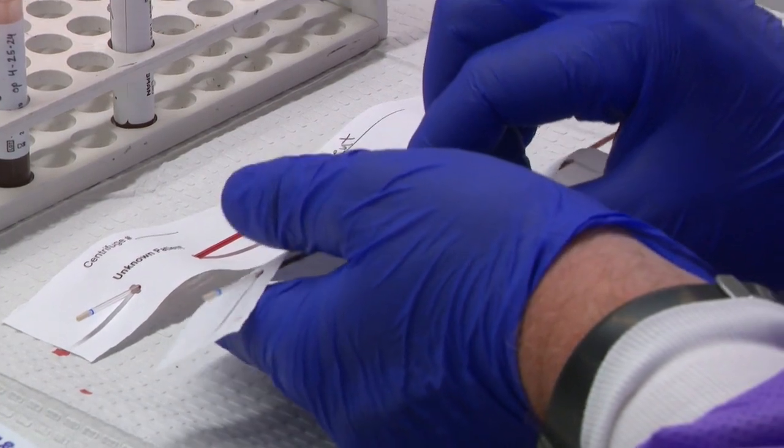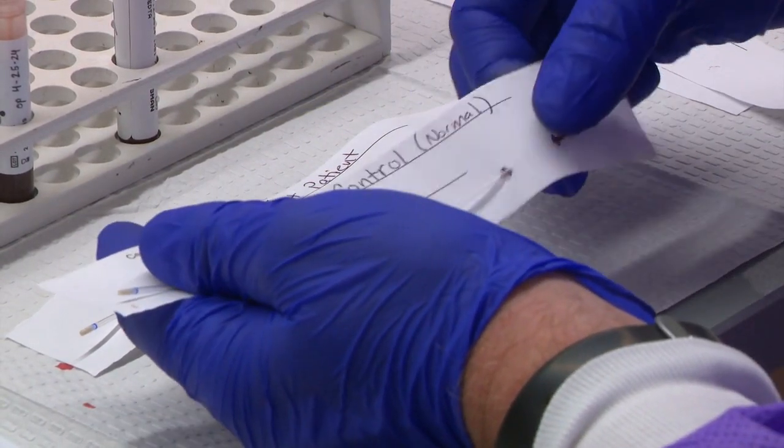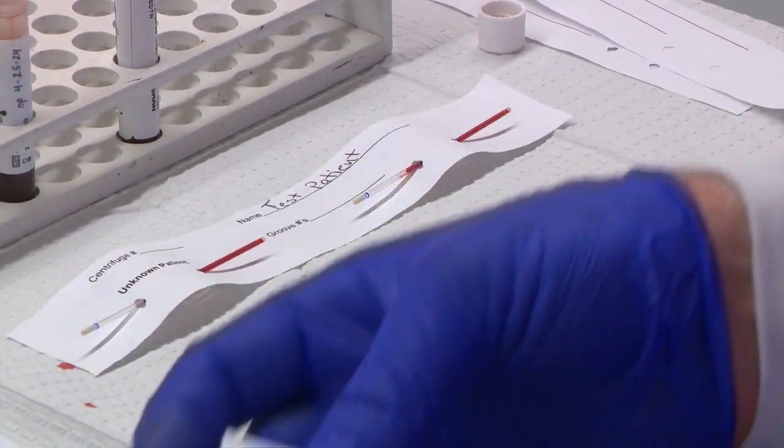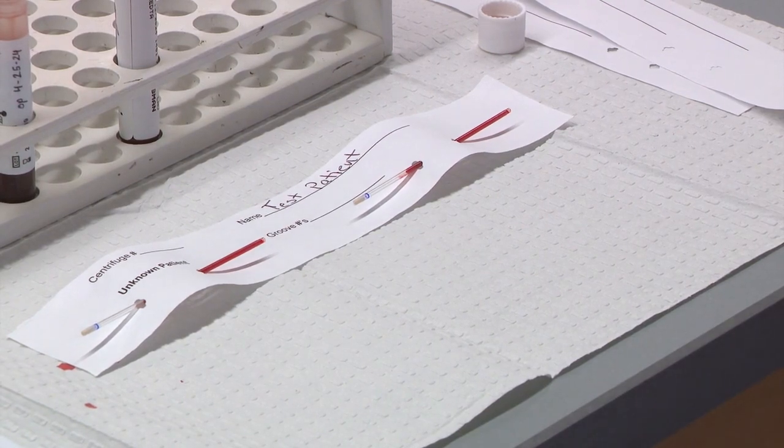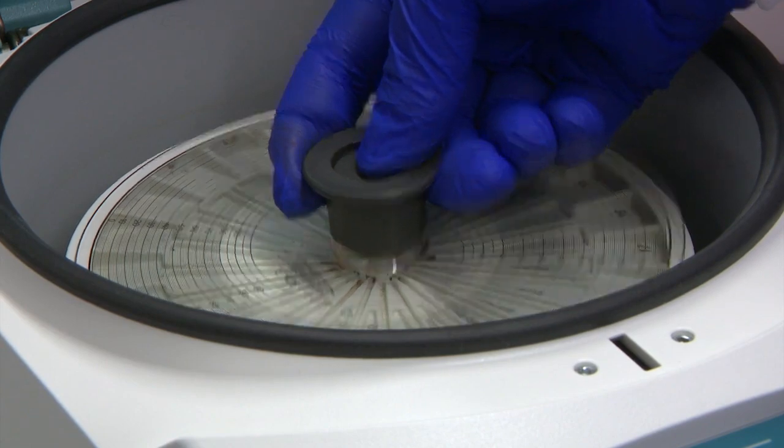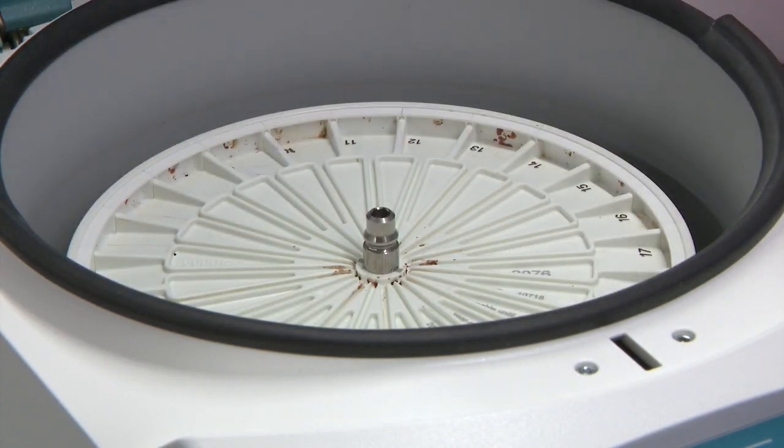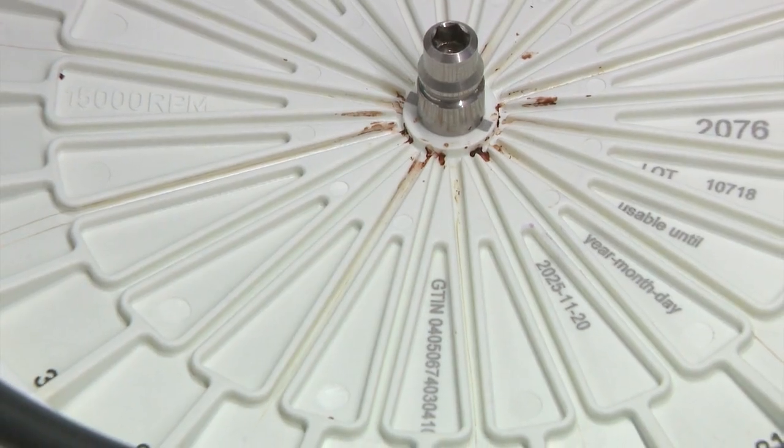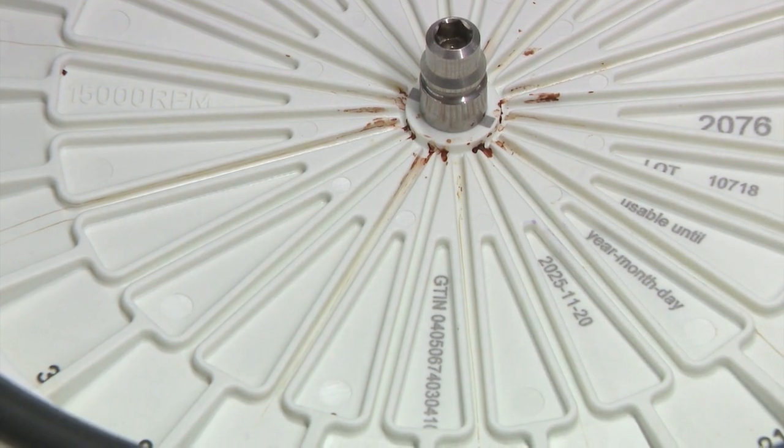Carefully transport the tubes to the centrifuge area, making sure to hold onto the sheet and the tubes with your fingers so the tubes do not slip out. Open the centrifuge and remove the lid. Notice that the centrifuge has grooves. These are the grooves that you will place your micro hematocrit tubes in.